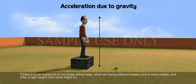If there is no air resistance on the bodies falling freely which are having different masses, one is heavy weight and other is light weight from same height h,